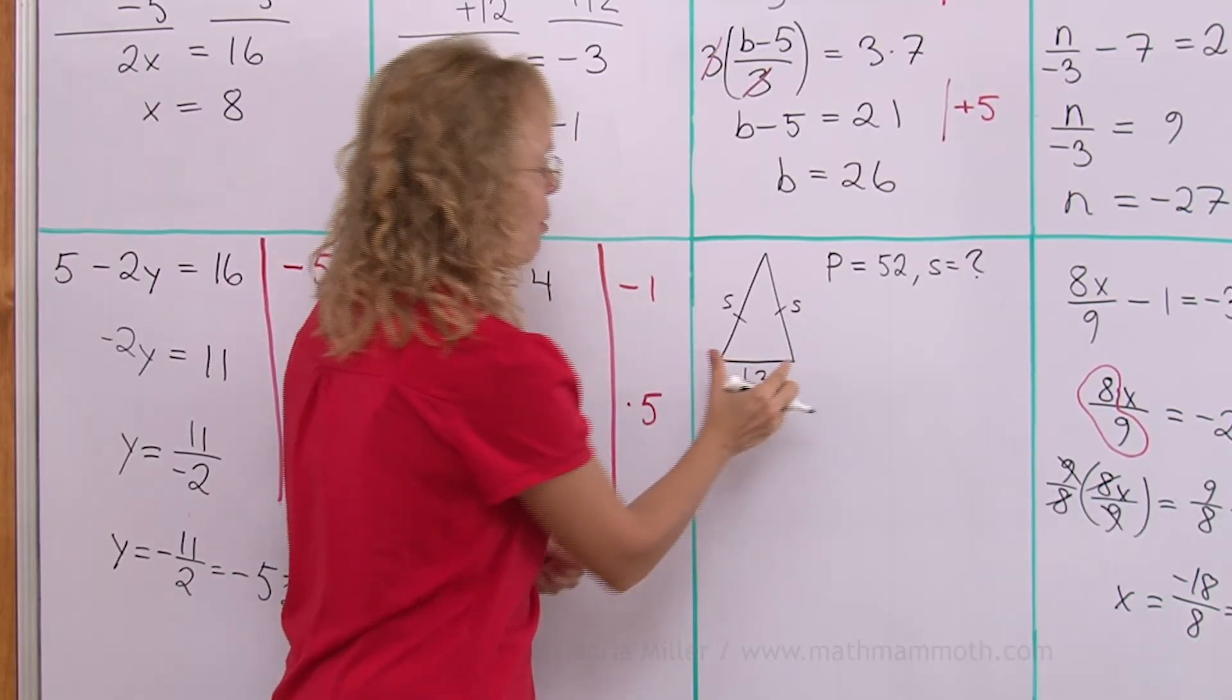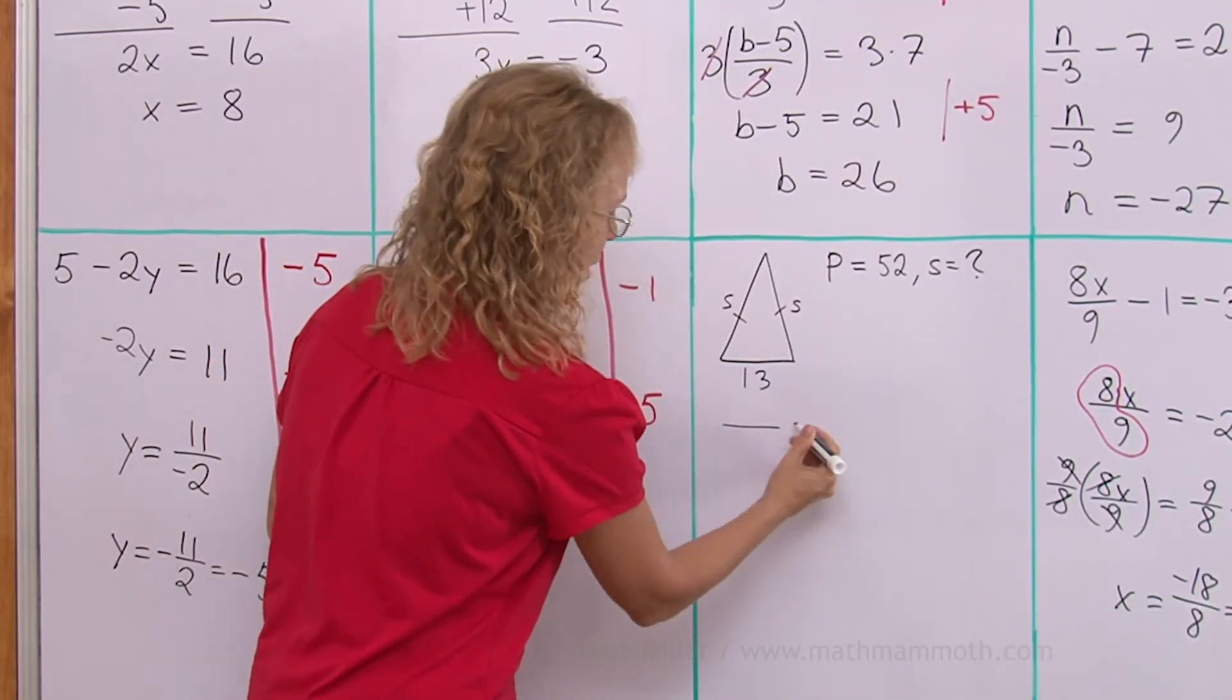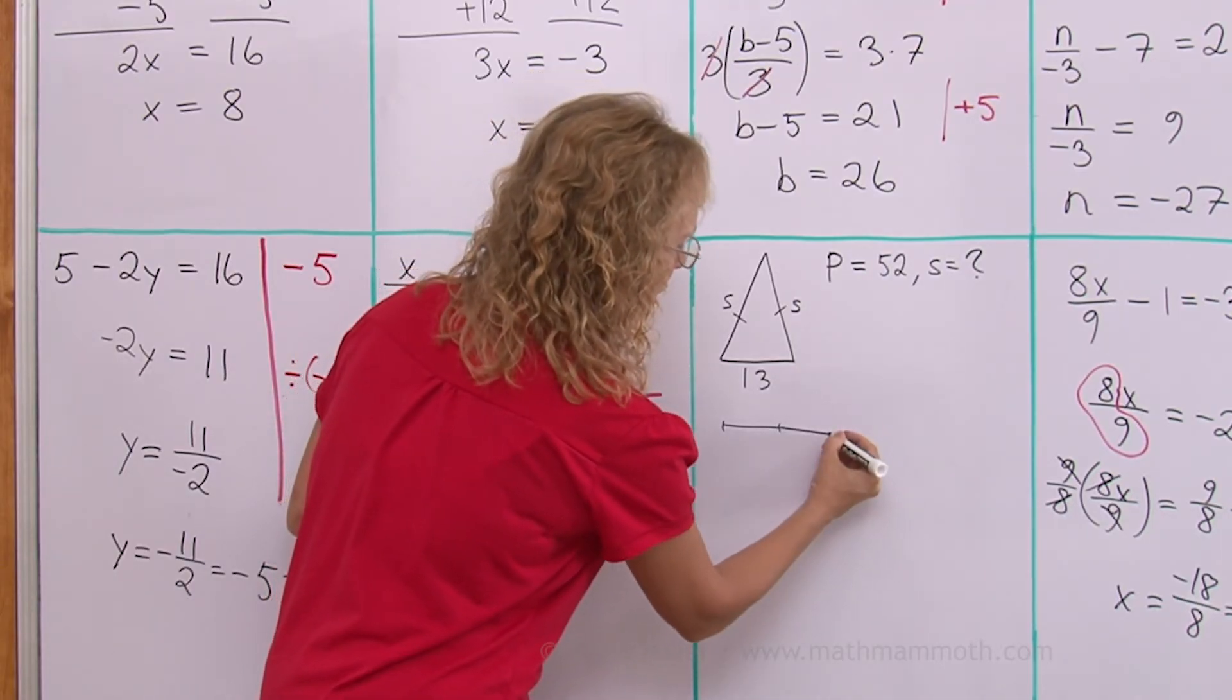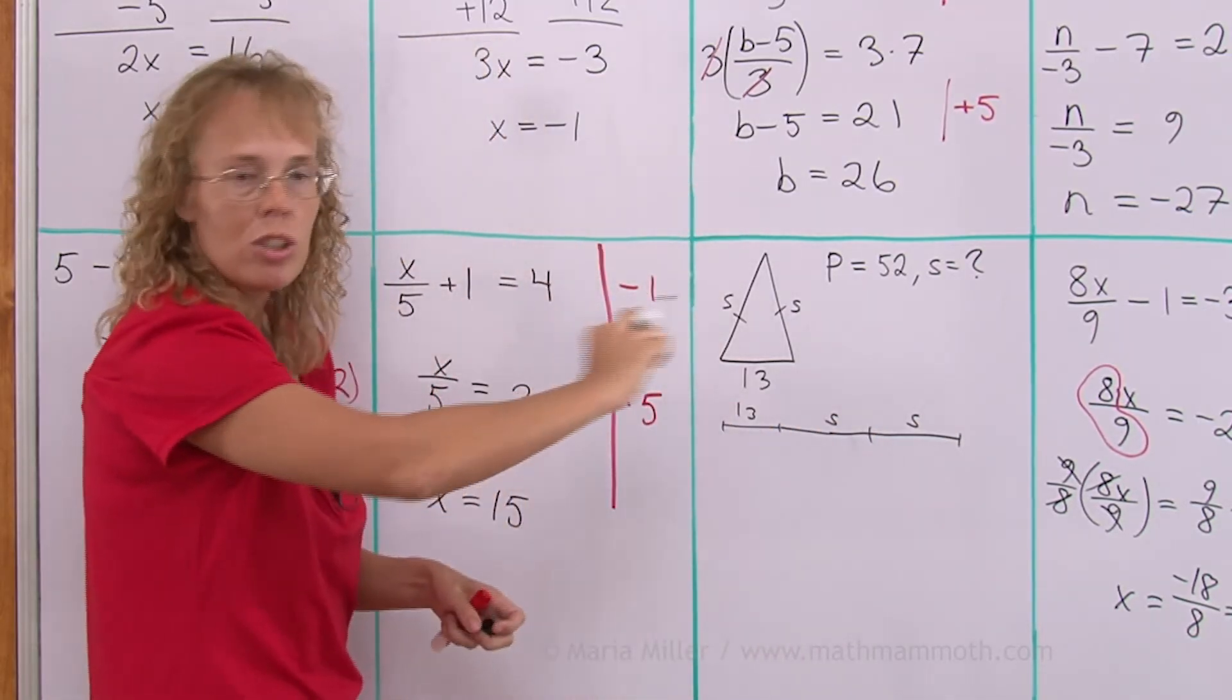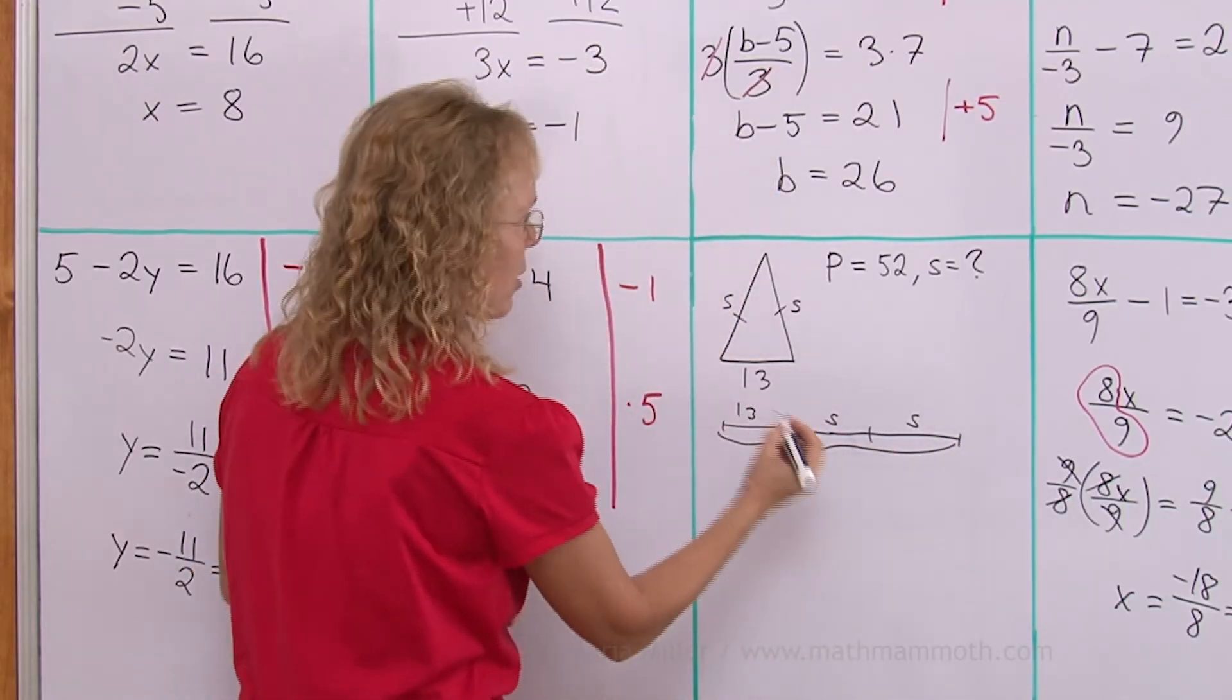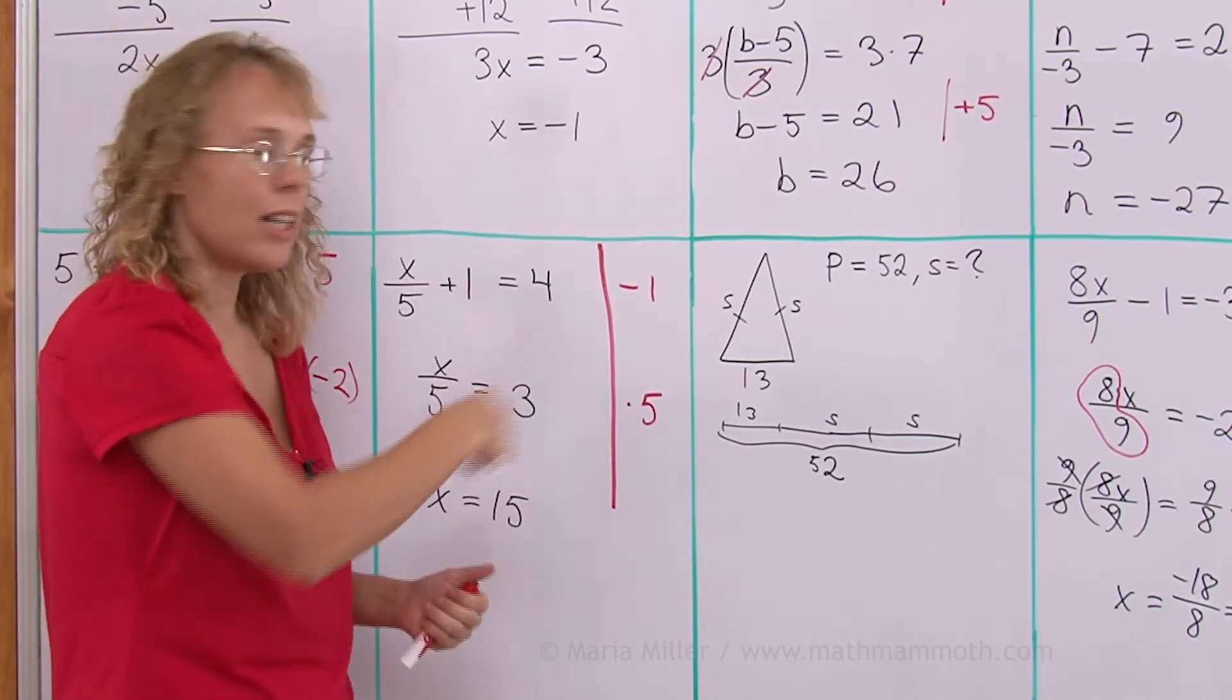Because imagine that I was able to open this triangle and have my 13 here. Like that. And then S here. S is longer. S and S, like that. Like a long stick or whatever. And the total, I know the total. The perimeter is the total. It's 52. That is my bar diagram that matches with the triangle.